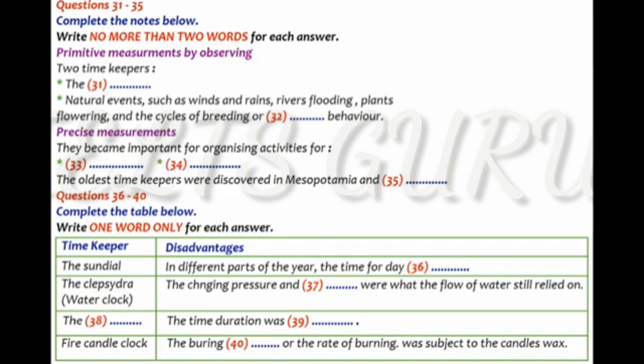It was found that the earliest ancient timekeepers were mainly invented and used in Mesopotamia, where the water clock was introduced from, as well as in North Africa, especially in the area of ancient Egypt. Now I would like to introduce you to some of the most well-known ancient timekeepers, as well as the disadvantages of them, for which they were replaced by various new forms of clocks that were used afterwards.